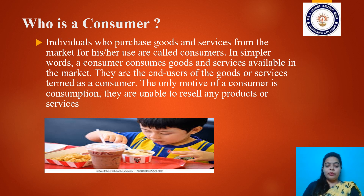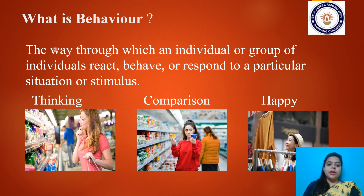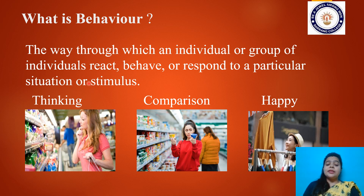Now moving to the second important word — behavior. What is behavior? The way through which an individual or group of individuals react, behave, or respond to a particular situation is considered behavior. Behavior is not only seen in humans; we can notice it in all types of living beings. So behavior is nothing but how we react to something — that something may be a product, goods, a situation, or a condition that a particular individual may be going through.